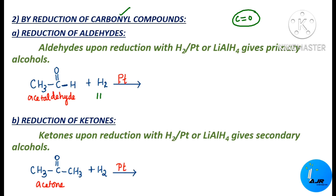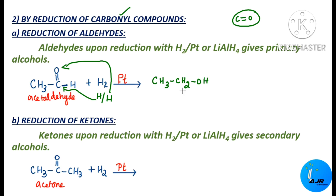What happens is hydrogen gets added — one hydrogen to the oxygen and one hydrogen to the carbon — giving CH3CH2OH, which is ethanol. This is a primary alcohol because the OH group is attached to a carbon atom which is attached to only one other carbon atom, making it a primary carbon.